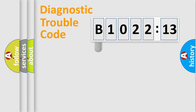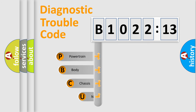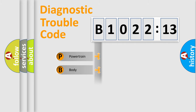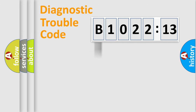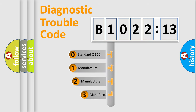First, let's look at the history of diagnostic fault code composition according to the OBD2 protocol, which is unified for all automakers since 2000. We divide the electric system of an automobile into four basic units: Powertrain, Body, Chassis, and Network. This distribution is defined in the first character of the code.